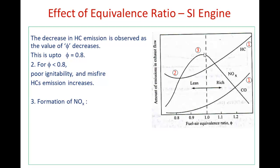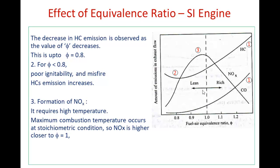For NOx emission in the SI engine, higher combustion temperature leads to more NOx formation. The NOx curve has a bell shape, with maximum NOx concentration near stoichiometric condition (phi = 1). However, point 3 shows the peak is slightly towards the lean side, around phi = 0.95. At this value, combustion temperature remains near maximum and surplus oxygen also exists, so the combination of high temperature and excess oxygen results in higher NOx formation.